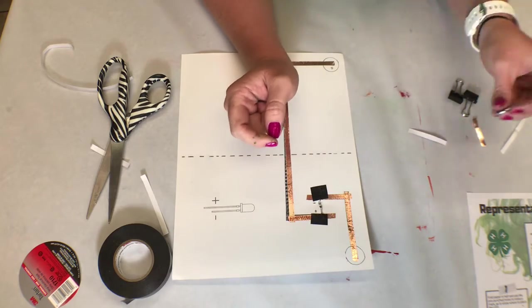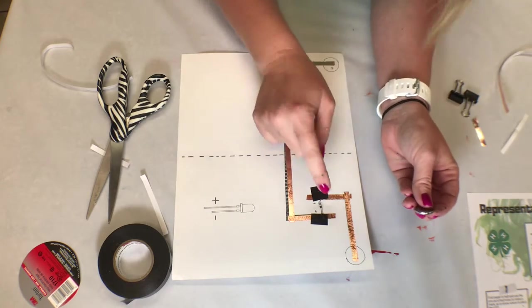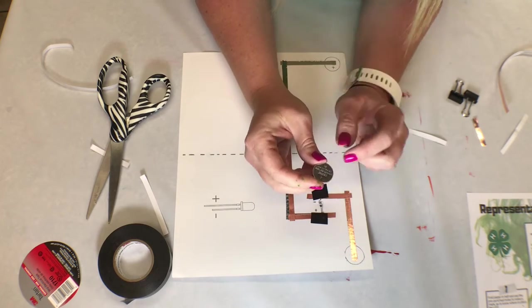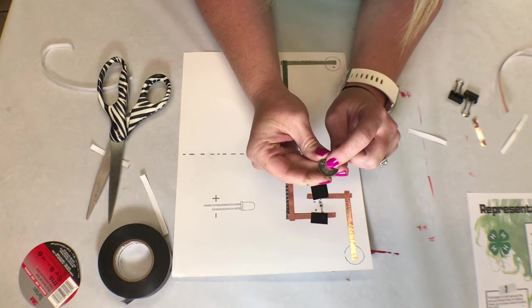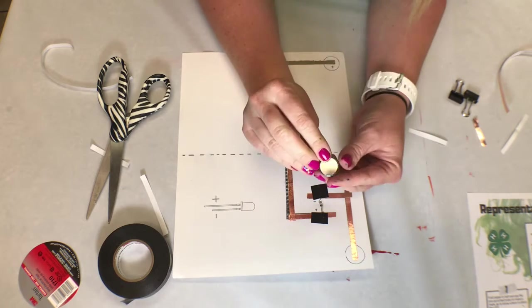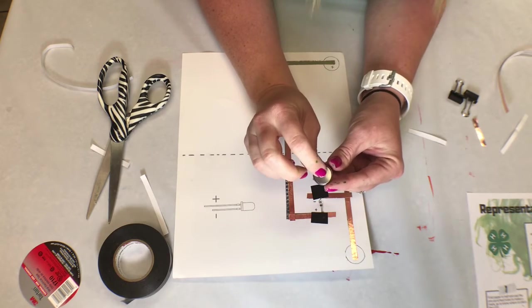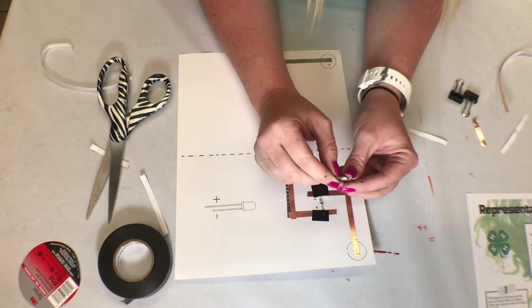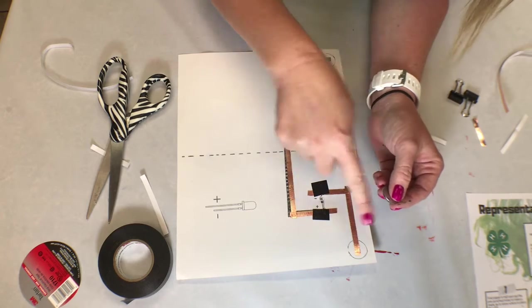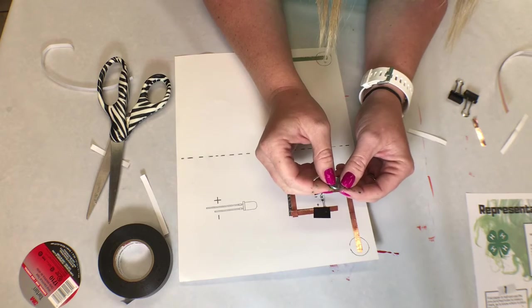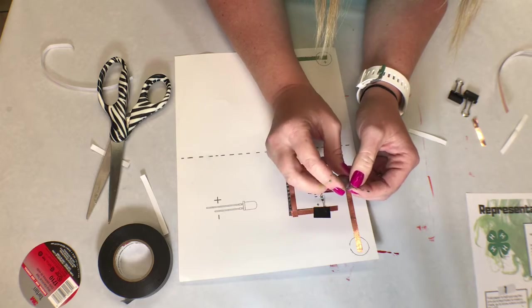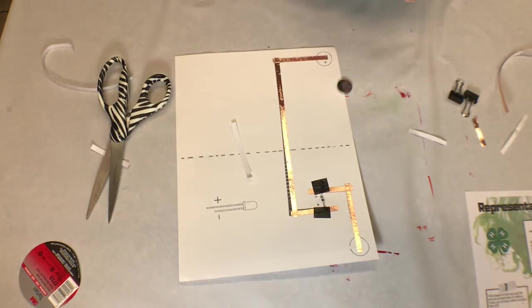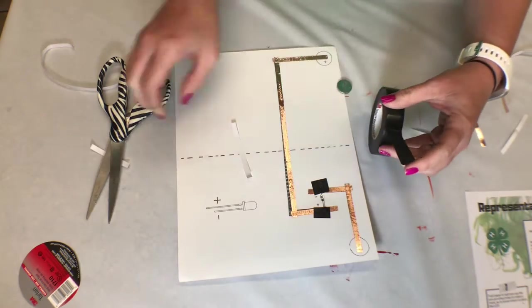Now we need the electricity, the power. And in this circle is the negative. This circle is the positive. When you look on a battery, the positive is always going to be marked with a plus sign. So the opposite side is the negative side. Put the battery down on the tape, or onto our drawing. You will need to tape the battery on. Just the edges, because you need to make sure you have a good connection. So I'm going to use some more electrical tape.